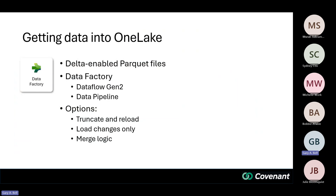More specifically, what we're using in the One Lake is what they call a Delta-enabled Parquet file. The difference is that Delta-enabled Parquet files allow for add, update, and delete — the CRUD operations you'd typically associate with a database platform. A standard Parquet file is just additive. So the Delta-enabled Parquet file is the common format in the One Lake environment. To get data into One Lake we need Delta-enabled Parquet files, and we can create those using Data Factory.